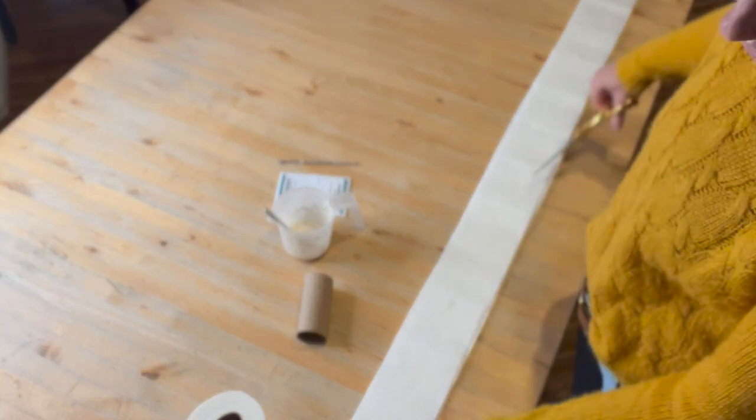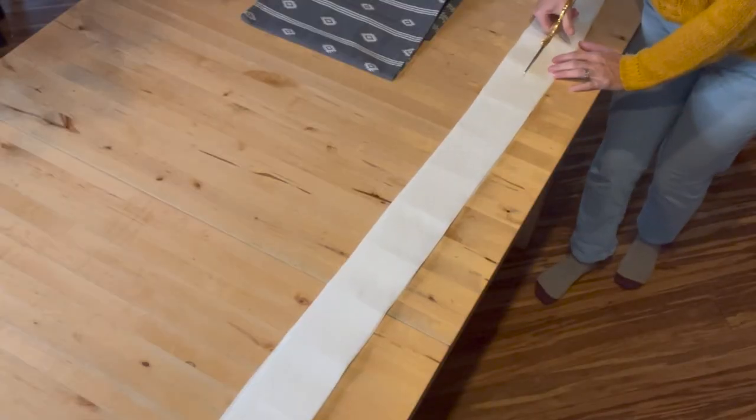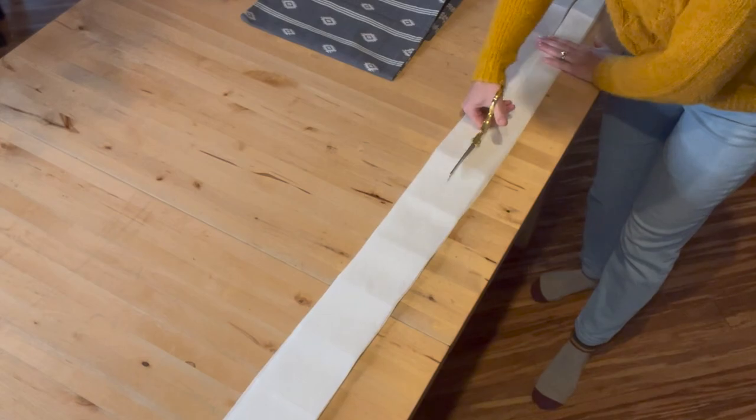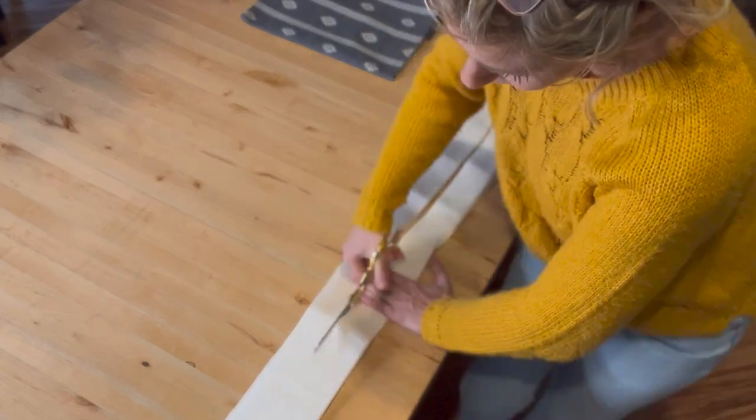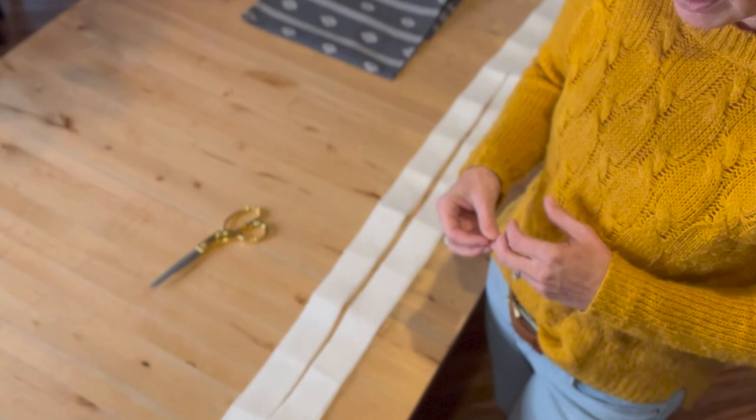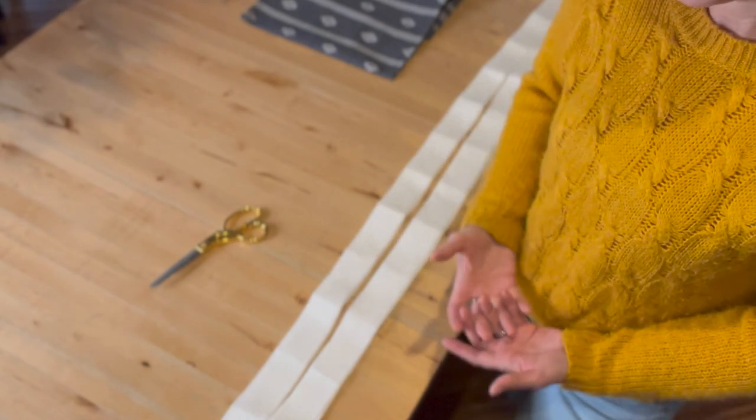Now that we've got everything lined up, we're just going to cut this strip in half. Don't worry too much about getting this exactly straight. This is something that's going to go on the ground. It's a super simple project that the kids can help with.